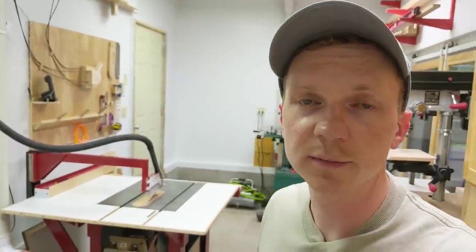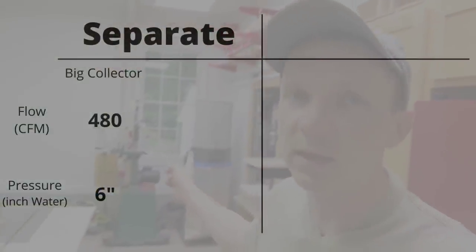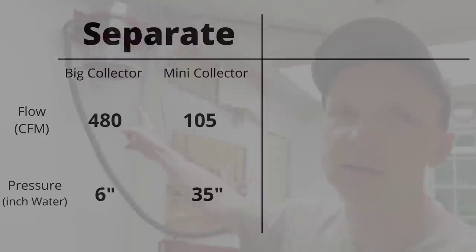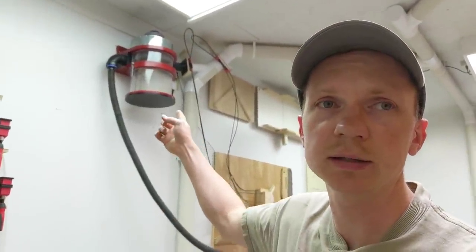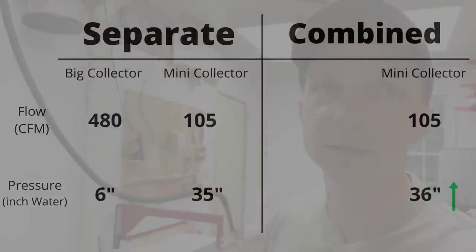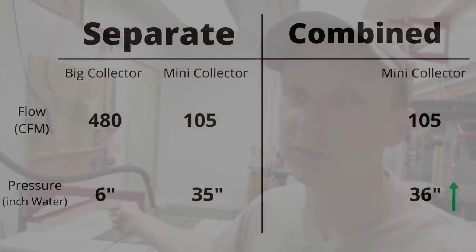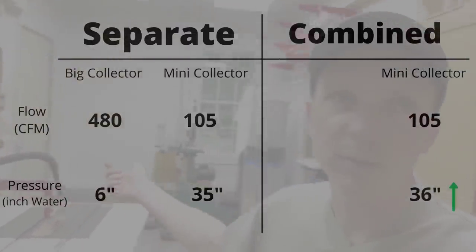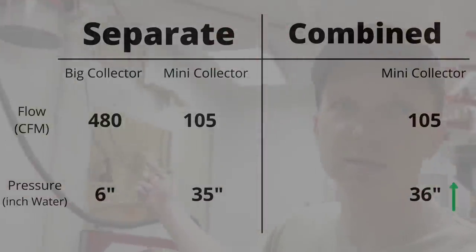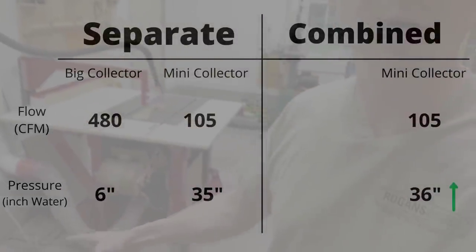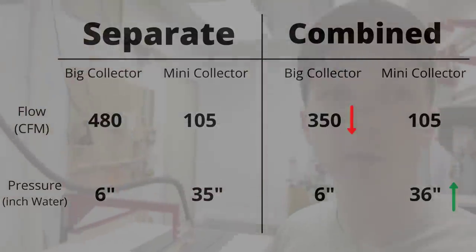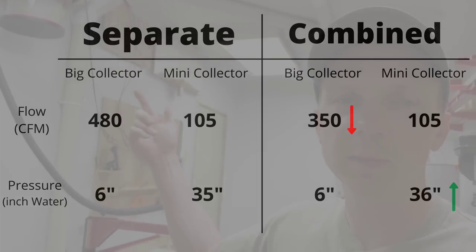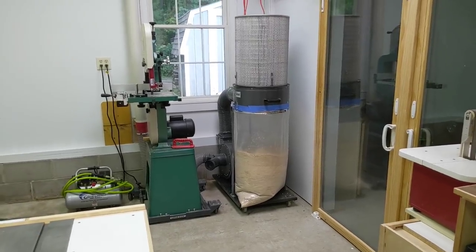So what did we learn from that testing? Well we confirmed that the main big dust collector is a high volume but pretty low pressure dust collector, and we also confirmed that the mini dust collector is a very high pressure but pretty low volume dust collector. We also learned that the mini dust collector when it's hooked up to the big dust collector maintains essentially the same airflow at the nozzle but the pressure went up slightly, I guess due to the additive pressure from the big dust collector as it's sucking on the little dust collector. What was interesting is that the airflow to the table saw underneath actually went down a little when the mini dust collector was hooked up.